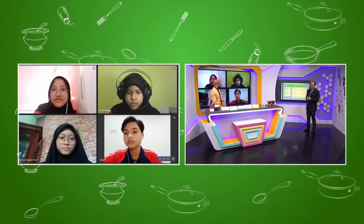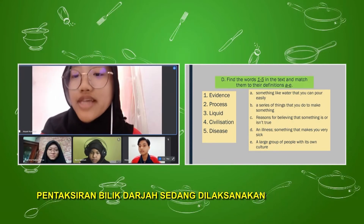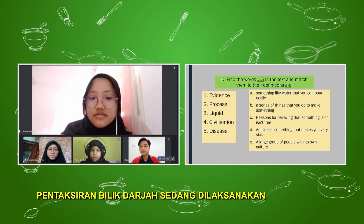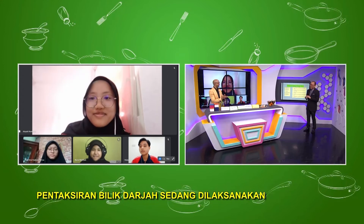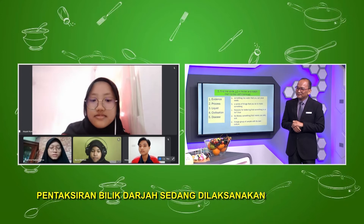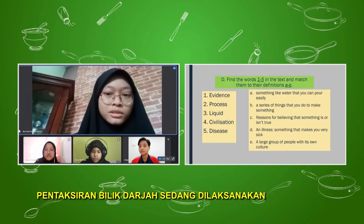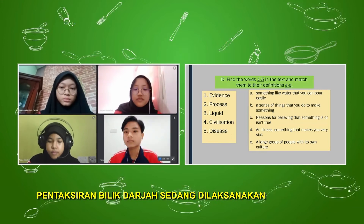Thank you. Now we are going to let our friends share the answers. Why don't we let Aisha try number two? Number two — process — B: a series of things that you do to make something. Process: a series of things that you do to make something. Yes, congratulations Aisha, good job! Now let's go to the third word — Anis, number three, liquid. Something like water that you can pour easily. That's correct, good job!